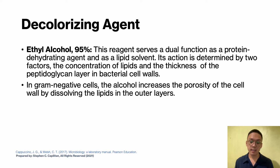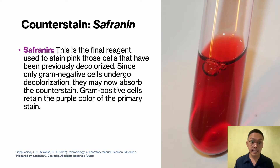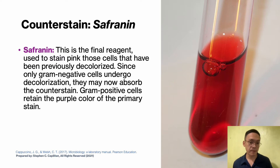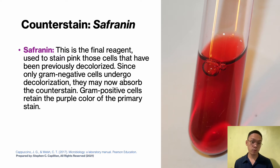In gram positive cells, the much thicker peptidoglycan layer results in more stringent retention of the CVI complex. As the pores are made smaller due to the dehydrating effect of the alcohol, the tightly bound primary stain complex is difficult to remove and the cells remain purple. Be careful not to over-decolorize the smear with alcohol, as it will affect your results. The counter stain, safranin, stains pink those cells that have been previously decolorized — only gram negative cells.